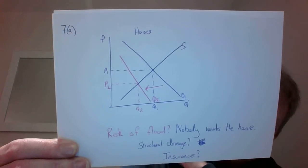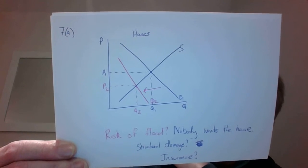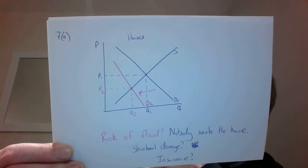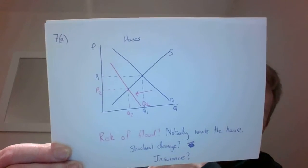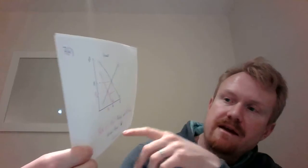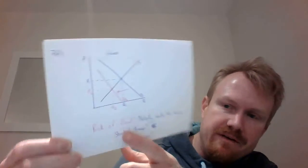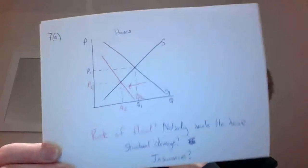I suppose you could say, taste and fashion for flood-affected areas are really going to mean that people don't want to have houses there. So the demand is going to shift to the left, and we're basically saying, what does the risk of a flood do? It means that nobody wants a house.